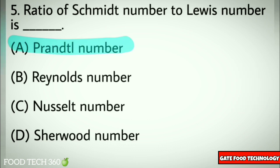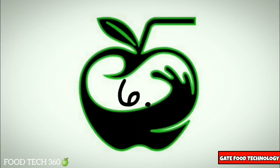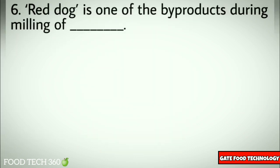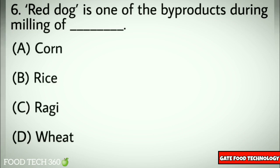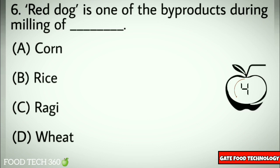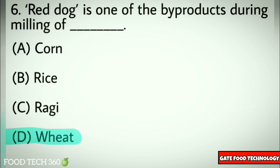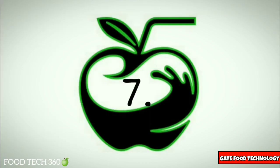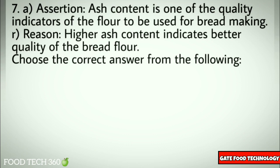Question number six: Red dog is one of the byproducts during milling of — options: A) corn, B) rice, C) ragi, D) wheat. Correct answer: D) wheat.